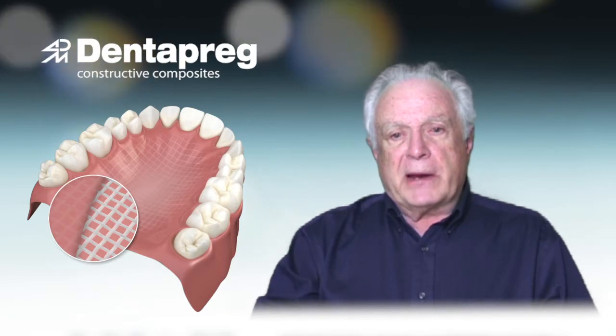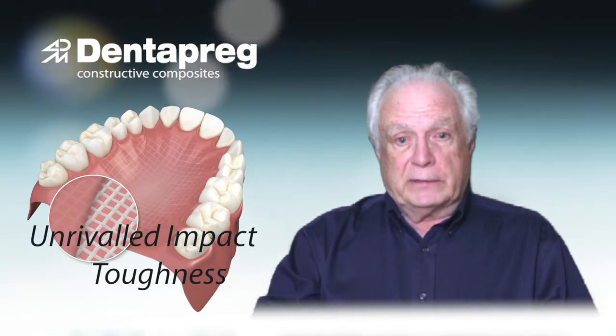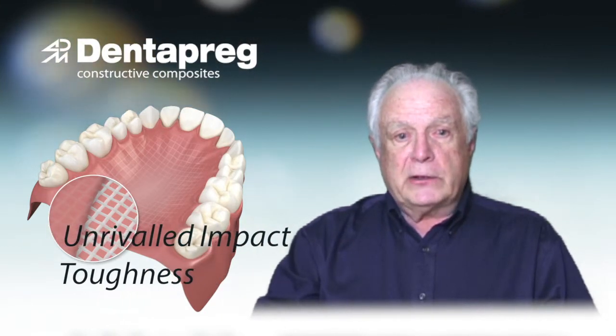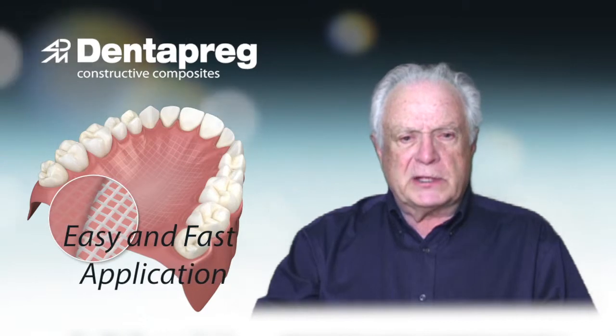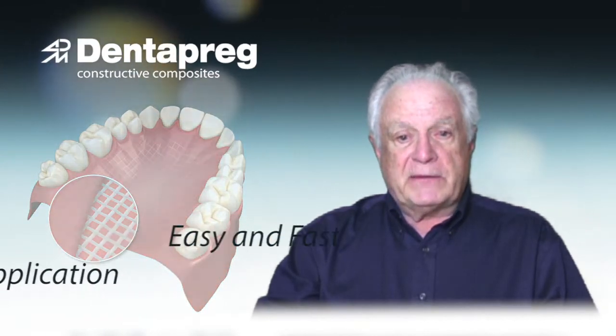Dentipreg mesh is made from aerospace-quality woven glass fiber that is pre-impregnated with heat curing resin compatible with all denture materials. There is no need to light cure the reinforcement, which eliminates that extra step, saving time and money.